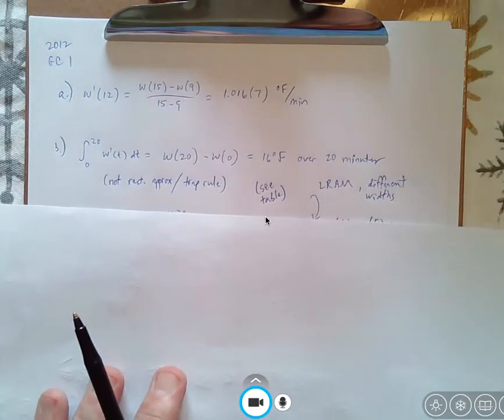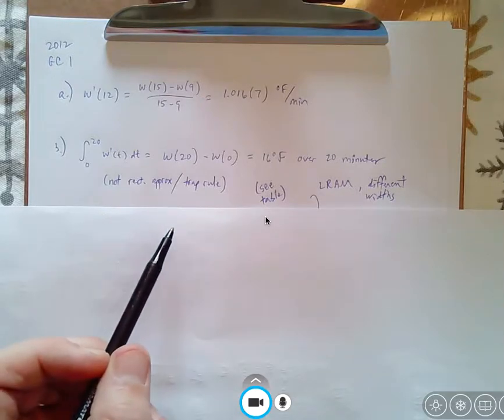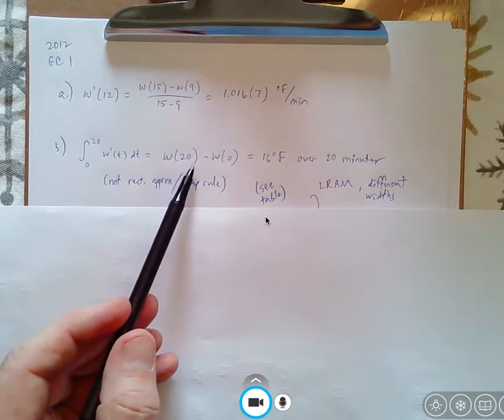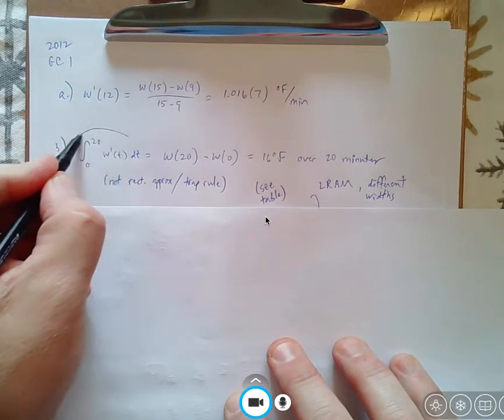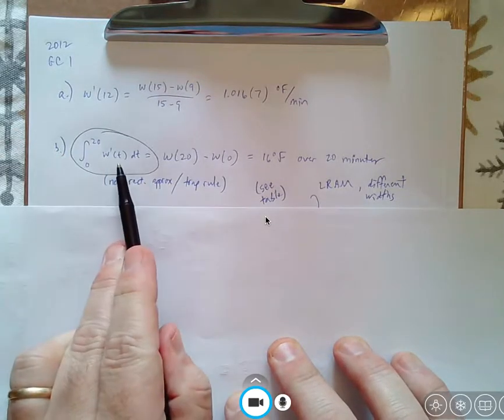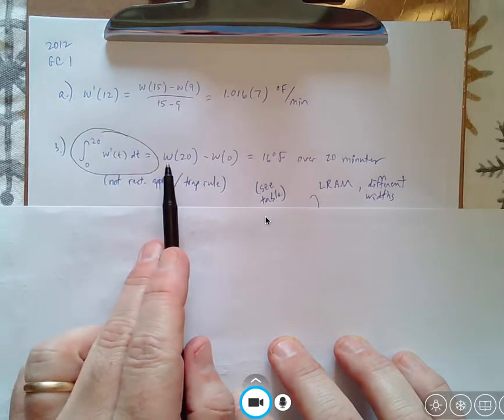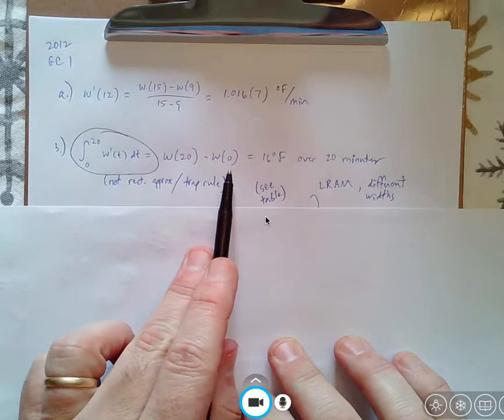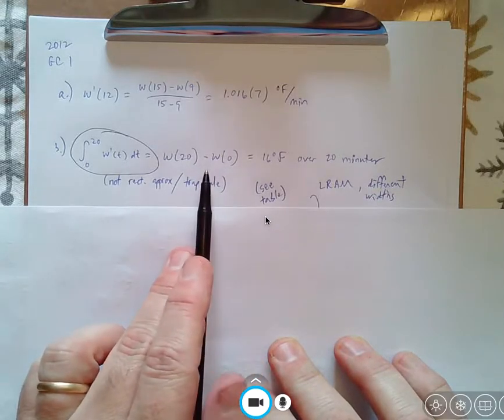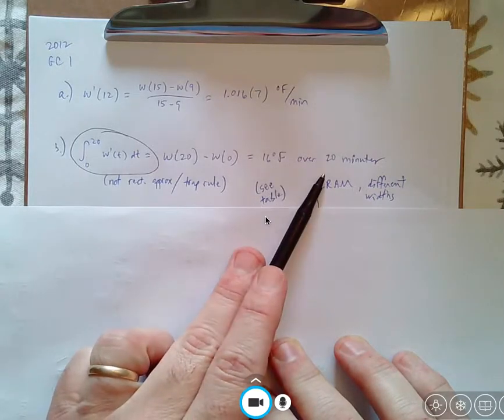Question B, do not use the trapezoid rule or rectangle approximation. Again, you have to use the table. But the first thing to note right here is the integral from 0 to 20 of w'(t) dt is w of the upper limit minus w of the lower limit. So just consulting your chart will give you that there's a 16 degree Fahrenheit change over the 20 minutes.